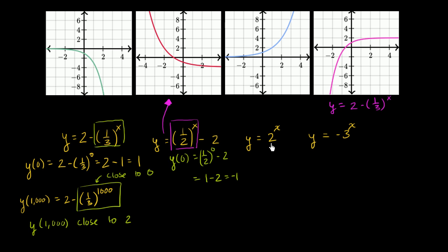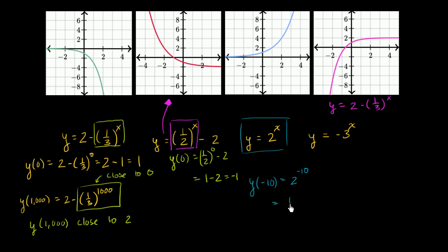Y equals 2 to the x — this might be the simplest. When x equals 0, y should equal 1, and we see that's this graph. This is your most basic type of exponential function: as x increases, y increases — the classic exponential shape. As x approaches more and more negative values, you're raising 2 to a large negative power, which is the same as 1 half to a large power, so y approaches 0.